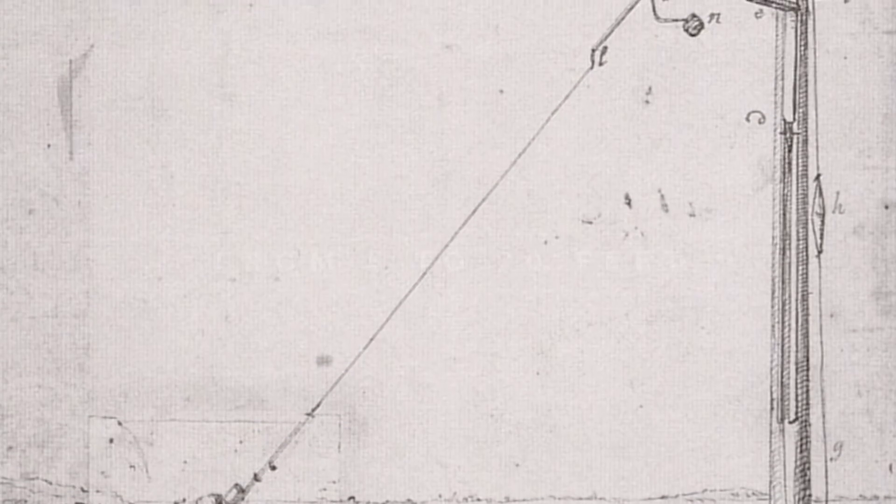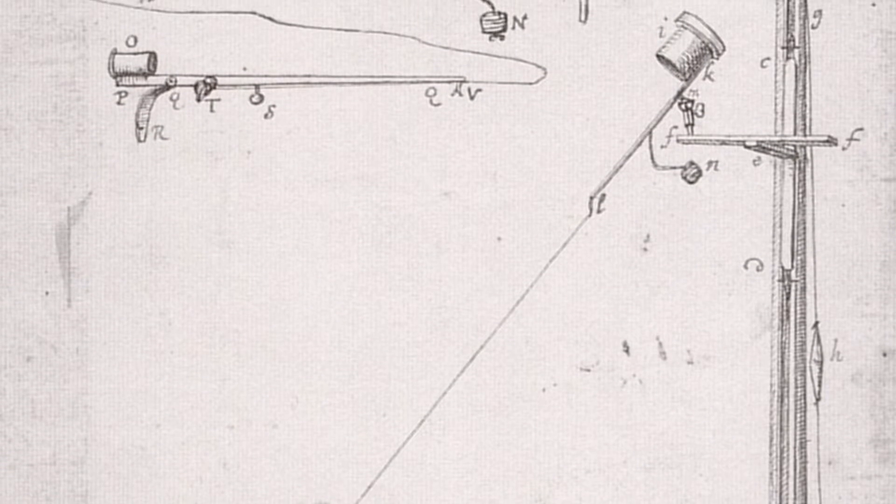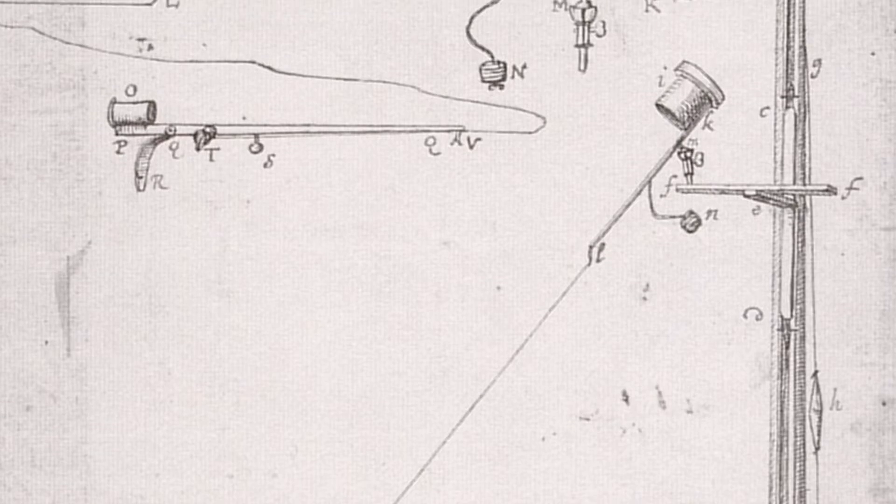Christiaan and Constantijn Huygens built a 23-foot-long telescope, which could magnify objects up to 100 times, and still had a wide viewing field.